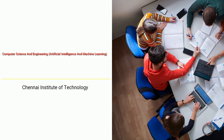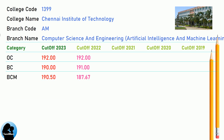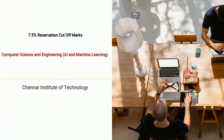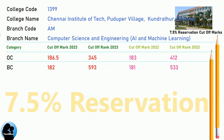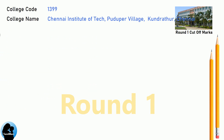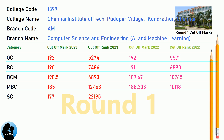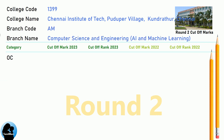DNA Cut-off for Chennai Institute of Technology in Computer Science and Engineering, Artificial Intelligence and Machine Learning. DNA 7.5 Reservation Cut-off for Chennai Institute of Technology in Computer Science and Engineering, AI and Machine Learning. DNA Round 1 Cut-off for Chennai Institute of Technology in Computer Science and Engineering, AI and Machine Learning. DNA Round 2 Cut-off for Chennai Institute of Technology in Computer Science and Engineering, AI and Machine Learning.